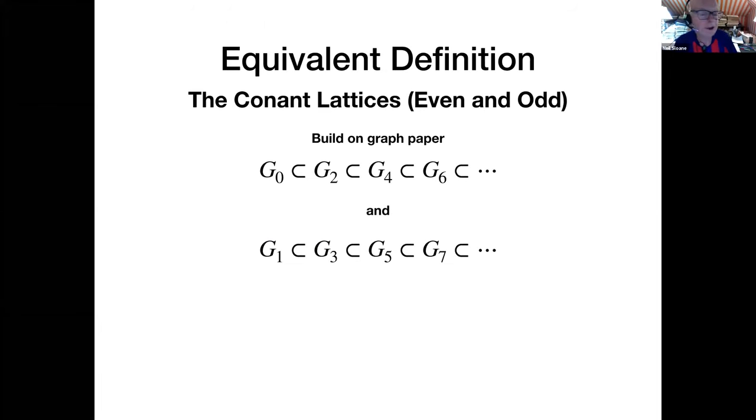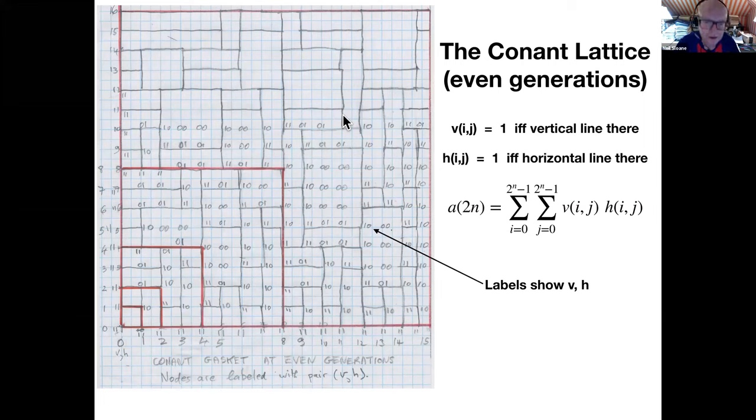When you try to prove it, you run into problems because it's hard actually to get your hands on these things. Doug McElroy, my old colleague, said, because if we draw it on a large piece of graph paper, there are actually two lattices that you get. Here's the even lattice. Instead of chopping up a unit square into little pieces, we keep all the little squares of size one and just build it up, filling up the infinite first quadrant. And at each point, this was Doug McElroy's suggestion, make a note of whether there's a vertical line or a horizontal line.